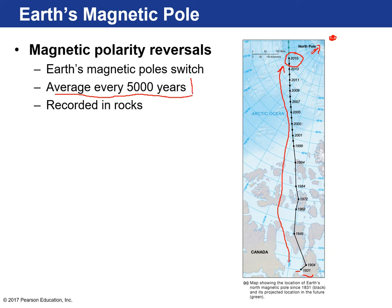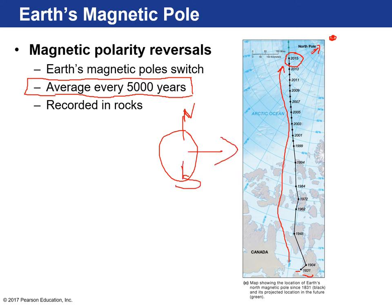The switch isn't instantaneous. They think there are a couple hundred years of a shifting pole where the north pole will shift towards the equator and hang around before the entire reversal. This has happened thousands of times in geologic history. Essentially, you have your Earth with a north and south pole, then there's a switch and what was north becomes south and vice versa.